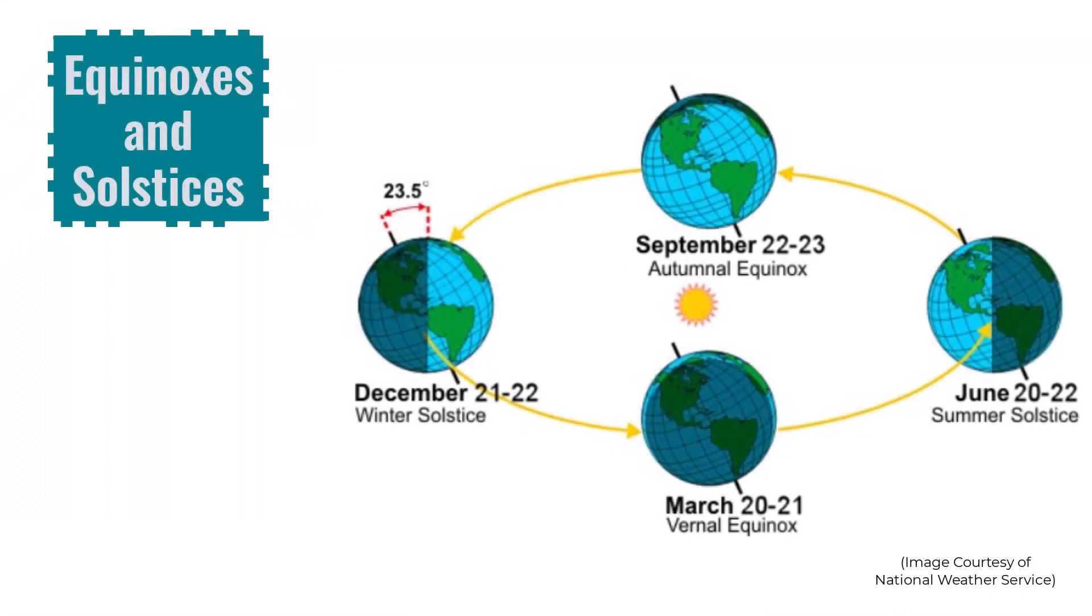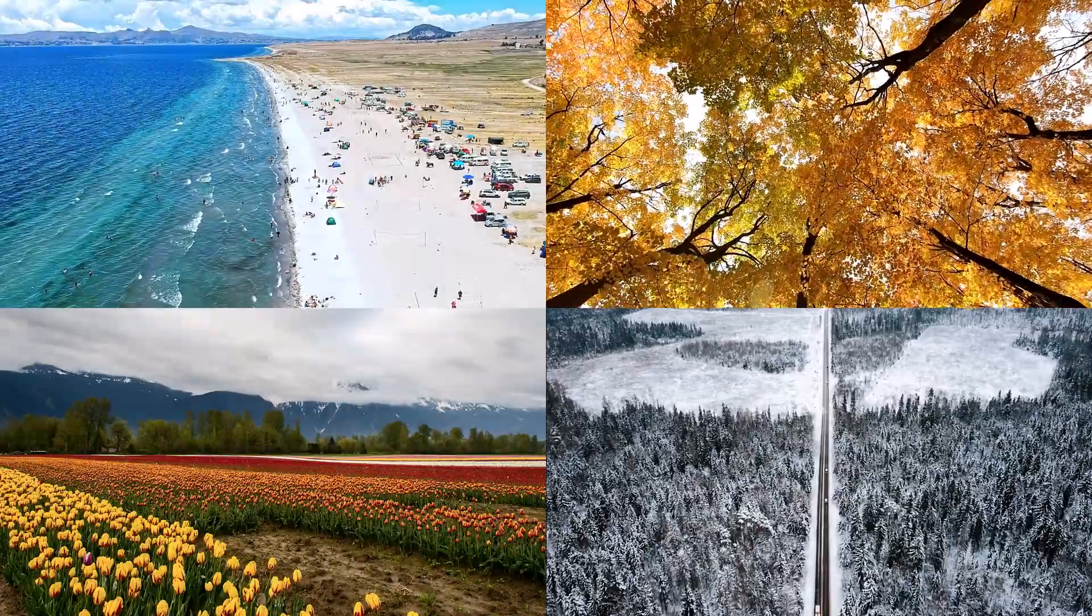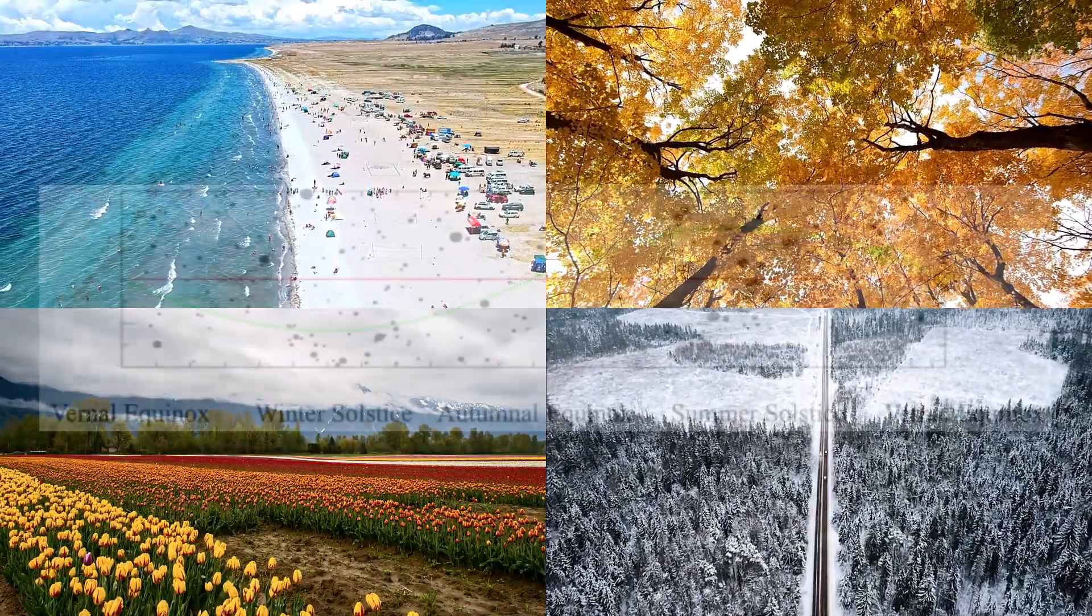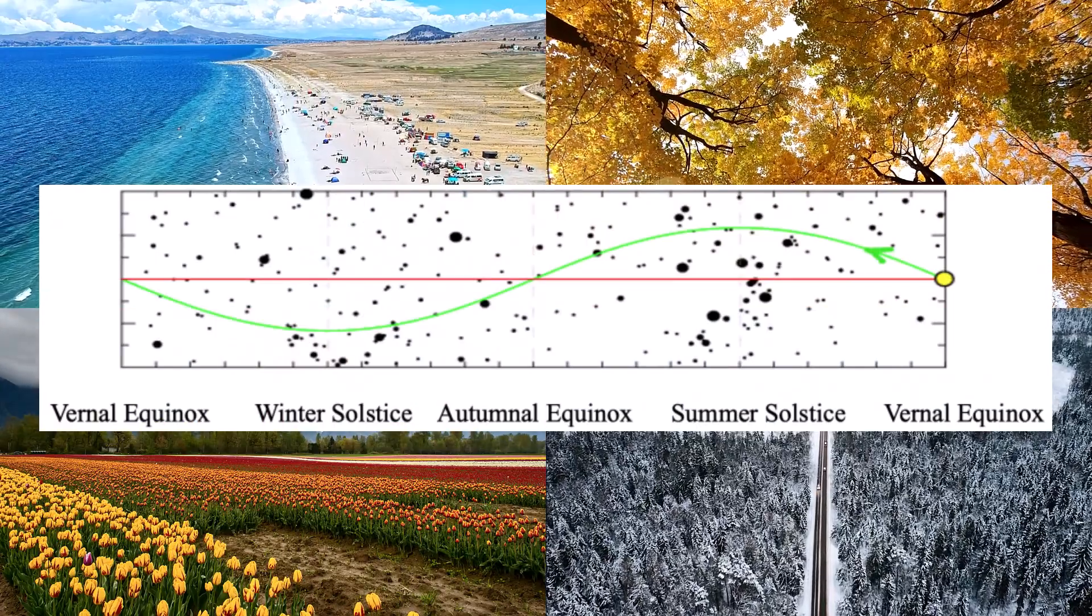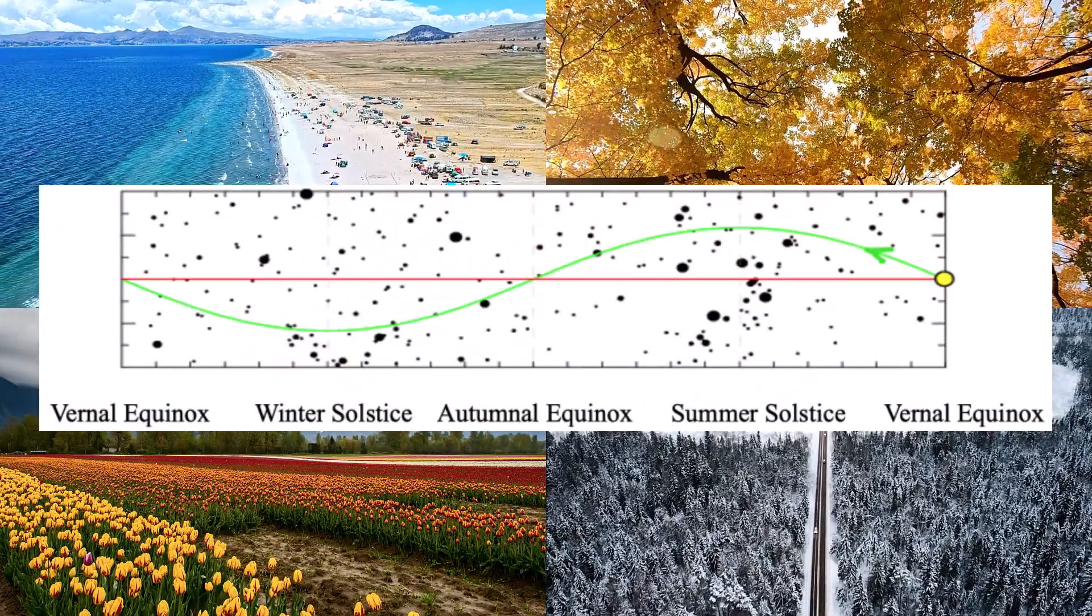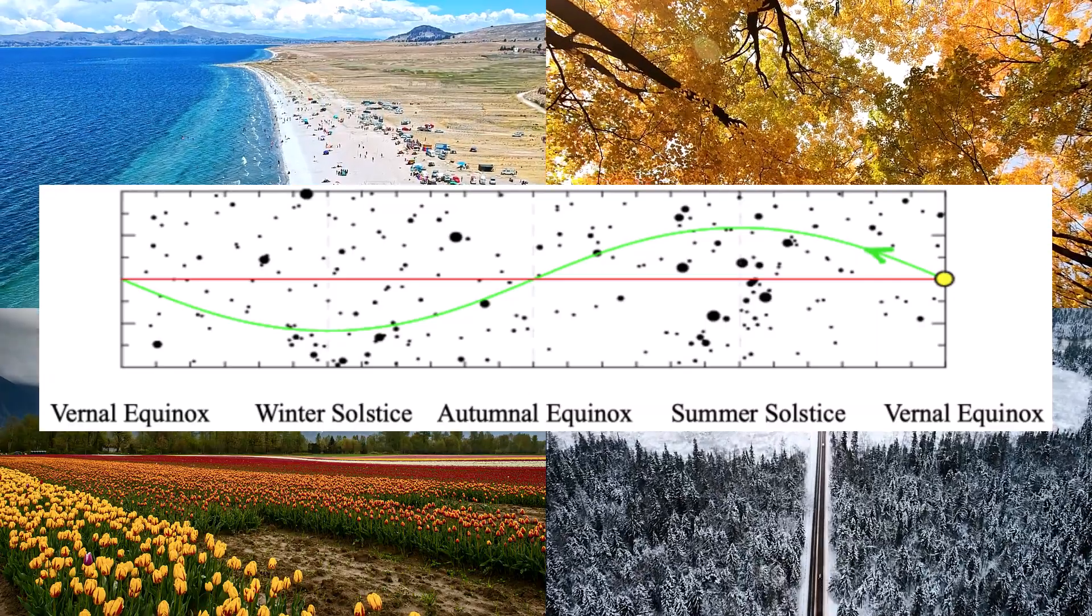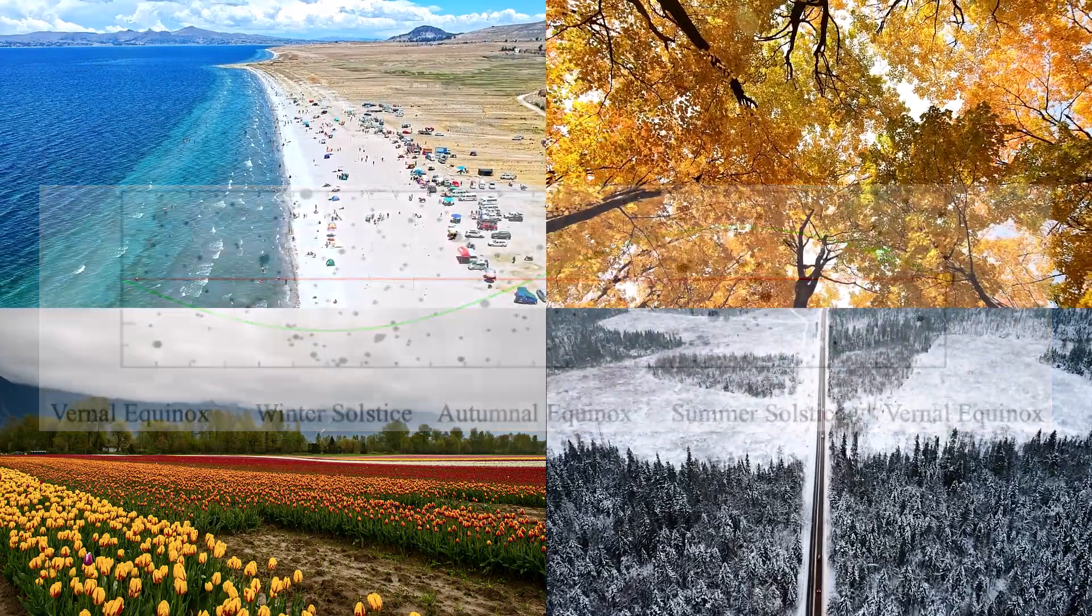Equinoxes and solstices. Because of Earth's 23.5 degree tilt we get seasons. This is because of the Sun moving up and down in the sky on the ecliptic. When the Sun is at a maximum point or minimum point on the ecliptic you get a solstice. At the maximum plus 23.5 degrees we have the summer solstice and at the minimum minus 23.5 degrees is where the winter solstice happens.